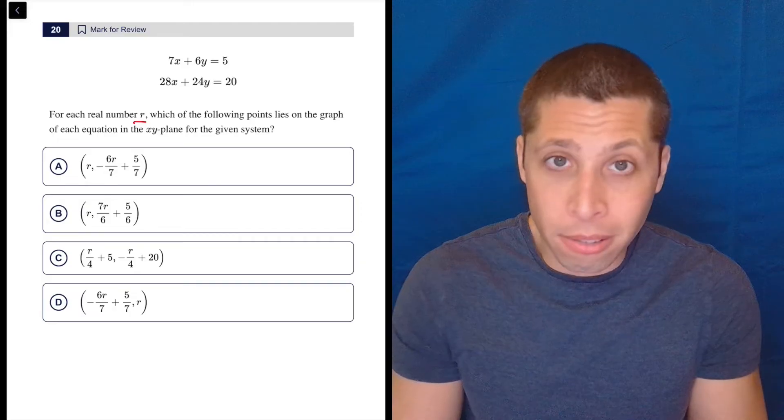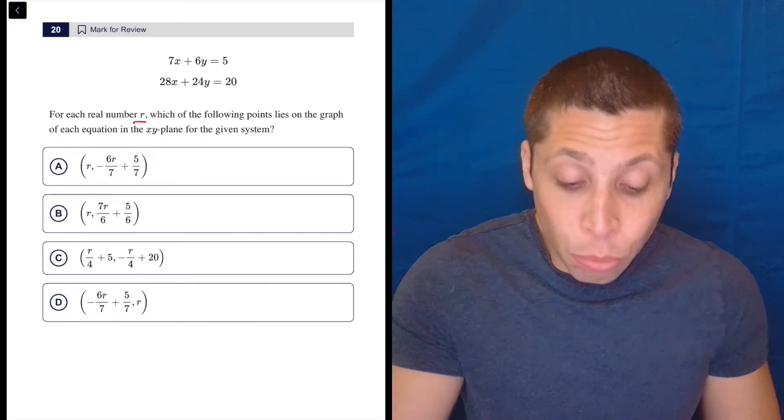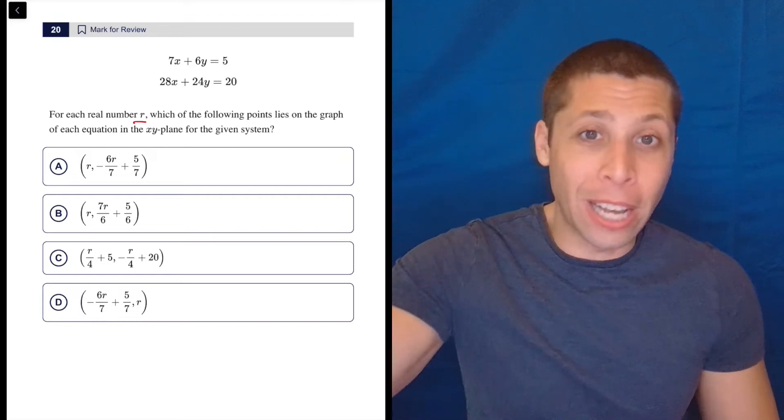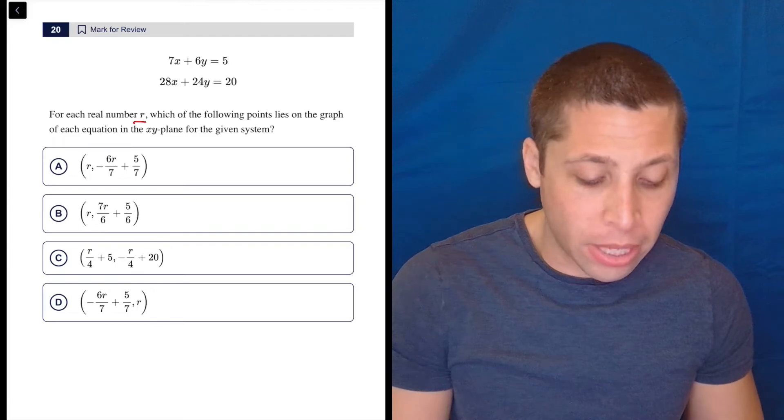It's in the question, it's in the choices. So we're not asked to solve for it, meaning can we make it up. For each real number R, meaning they're literally telling you R could be any number, which of the following points lies on the graph of each equation in the X, Y plane for the given system.